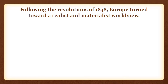Following the revolutions of 1848, Europe turned towards a more realist and materialist worldview. The idea of positivism — which, if you use the Spielvogel textbook, is not even mentioned — is in the key concept and something you should know. Positivism is a philosophical system that holds every rationally justifiable assertion can be scientifically verified or is capable of logical or mathematical proof. Auguste Comte was the founder of positivism, and the view that only scientific knowledge was valid and definitive was very popular during the late 19th century.